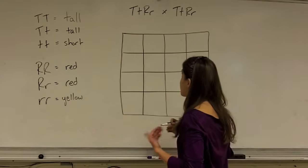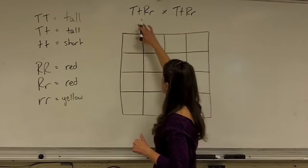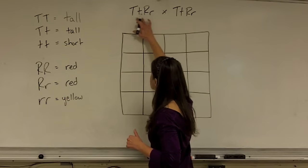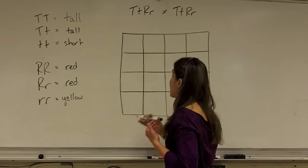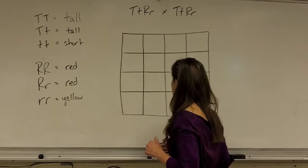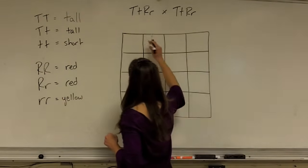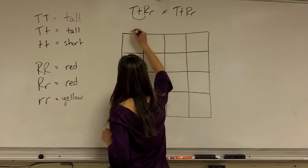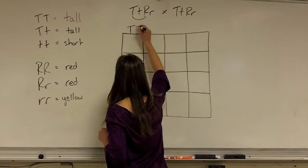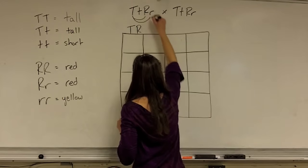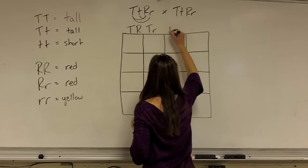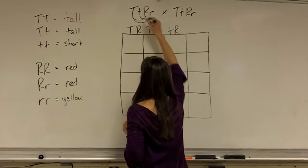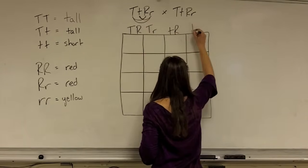In this case, the first, outside, inside, last refers to these two pairs of alleles. So the first of each pair, the outside alleles, the inside alleles, and the last alleles in each pair. For example, for this parent here, the first alleles are going to be big T, big R. Outside, big T, little r. Inside, little t, big R. And last, little t, little r.